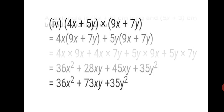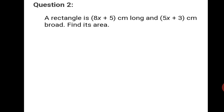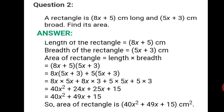Question 2 is a word problem. A rectangle is 8x plus 5 cm long and 5x plus 3 cm broad. Find its area. We need the formula for the area of a rectangle: area equals length into breadth. Length equals 8x plus 5 cm, breadth equals 5x plus 3 cm. So area equals 8x plus 5 into 5x plus 3.